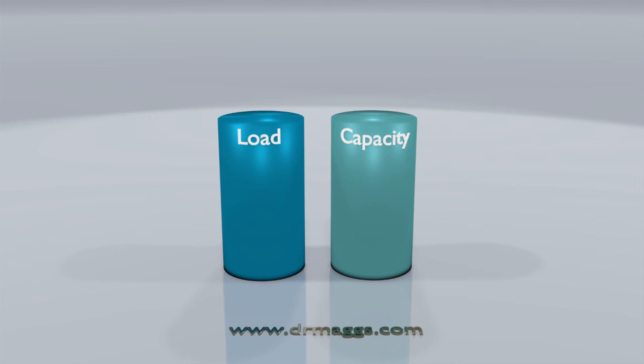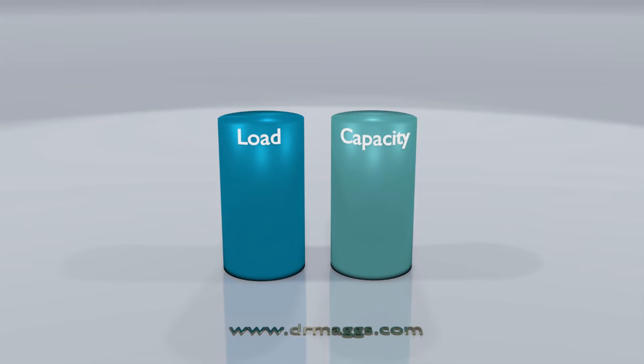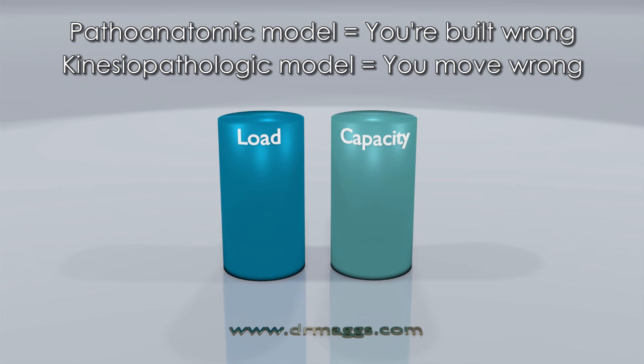Unfortunately, many people are told that their pain is due to biomechanical abnormalities such as asymmetries in their anatomy or that they just move wrong. Examples of this can include a short leg, flat feet, their glutes not activating, their sacrum is out of place, or other things.